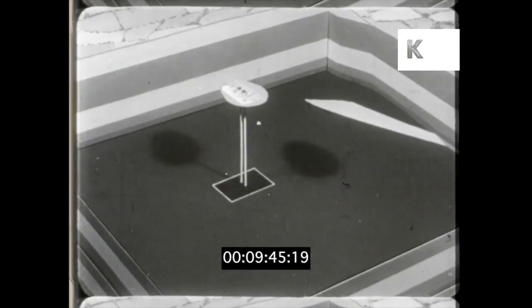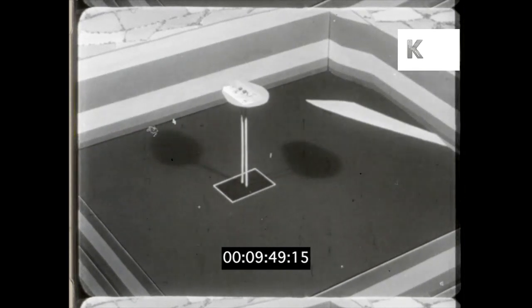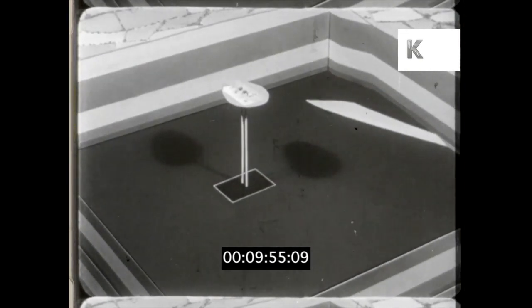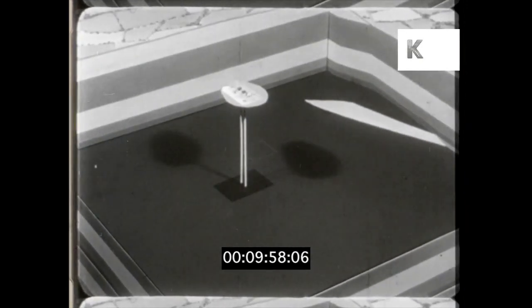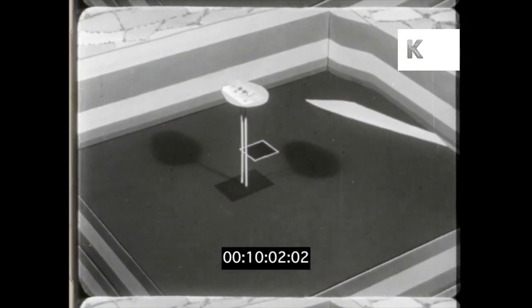An area of coal known as the shaft pillar is left round the base of the shafts. This is to hold up the surface buildings and to prevent the pit bottom layout from being crushed. Sometimes other pillars of coal are left, as you see here, to support a small town or reservoir.